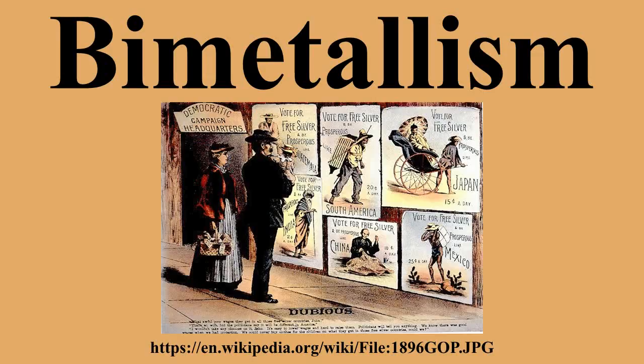Bryan, the eloquent champion of the cause, gave the famous Cross of Gold speech at the National Democratic Convention on July 9, 1896, asserting that the gold standard has slain tens of thousands. He referred to a struggle between the idle holders of idle capital and the struggling masses, who produce the wealth and pay the taxes of the country. He declared: 'You shall not press down upon the brow of labour this crown of thorns. You shall not crucify mankind upon a cross of gold.'